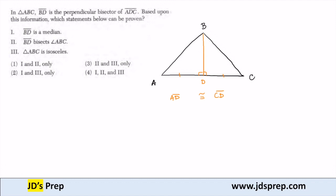Based upon this information, which statement can be proven? Well, looking at my two triangles here, triangle ADB is congruent to triangle CDB.